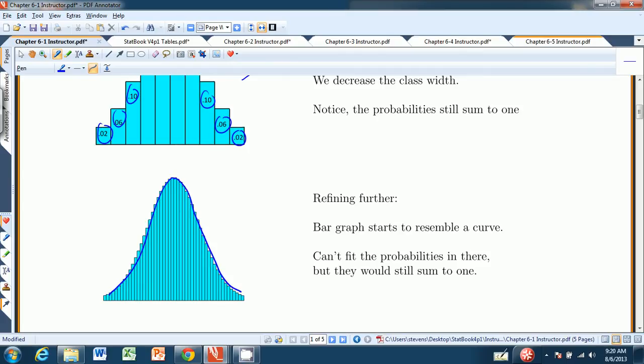And the class widths are too small to fit the probabilities in there. But if you could, they would still sum to 1. Again, a recurring theme here.